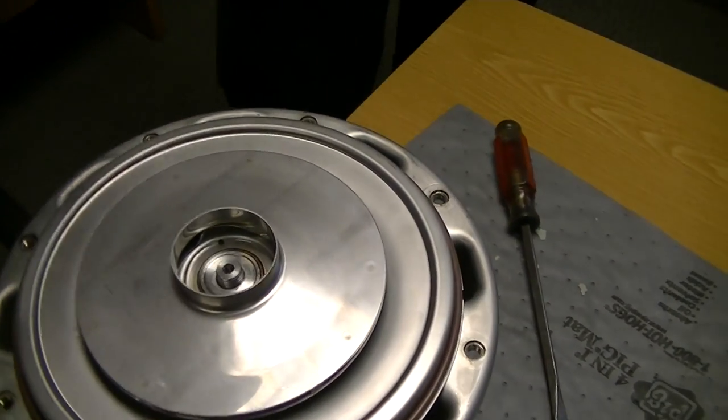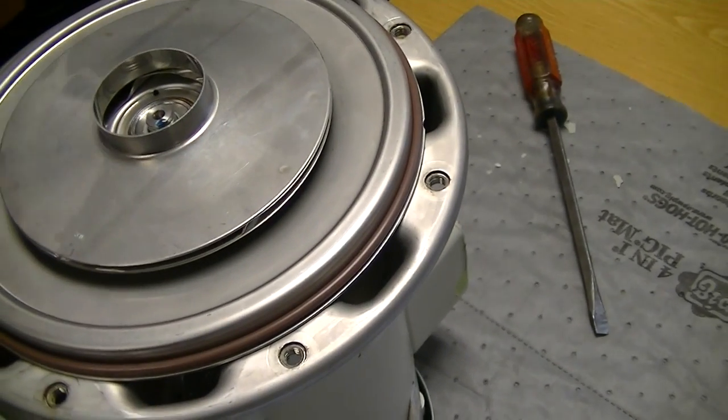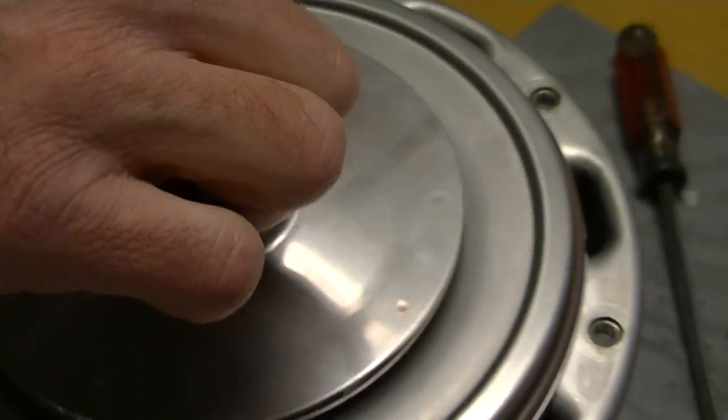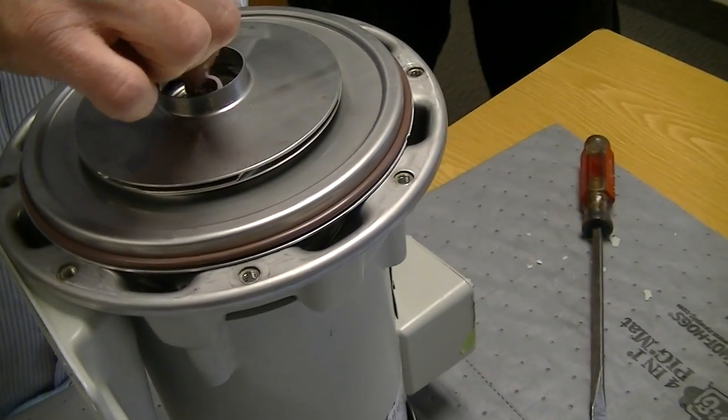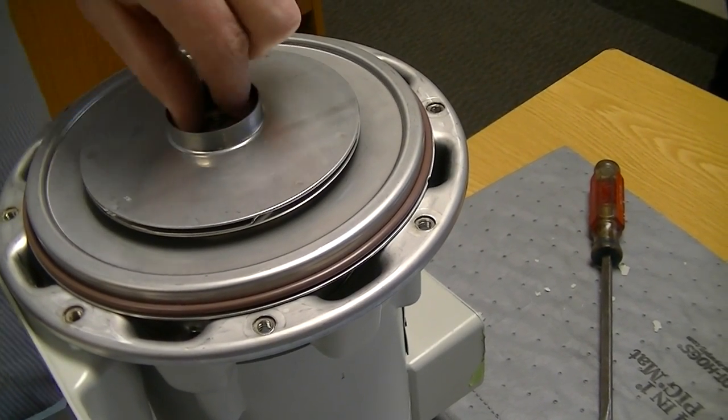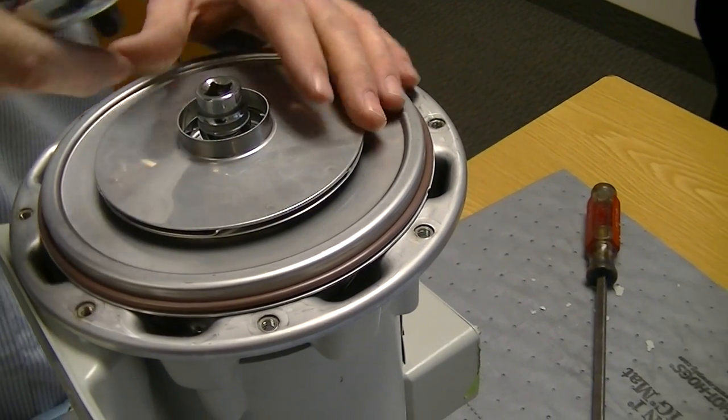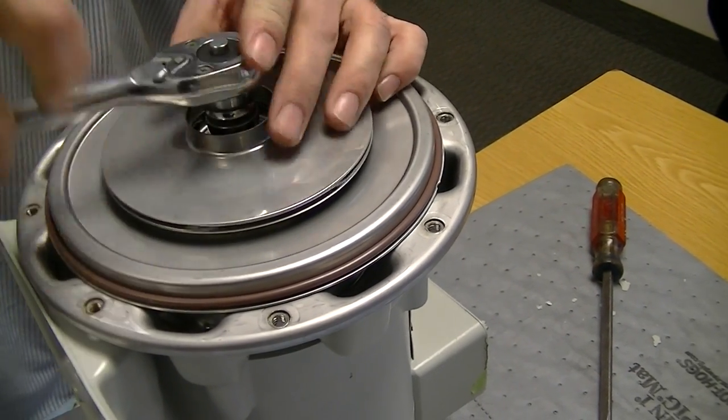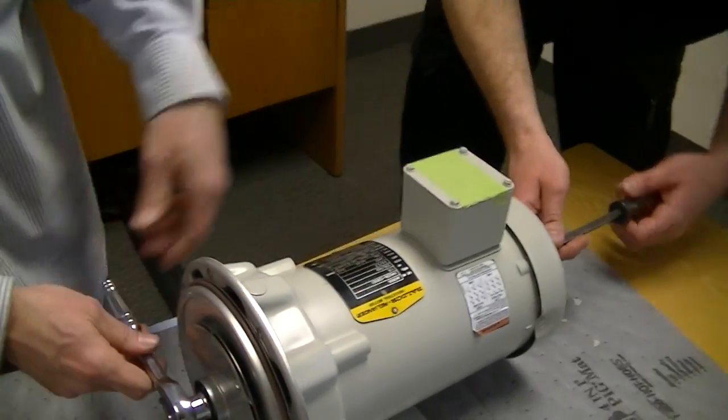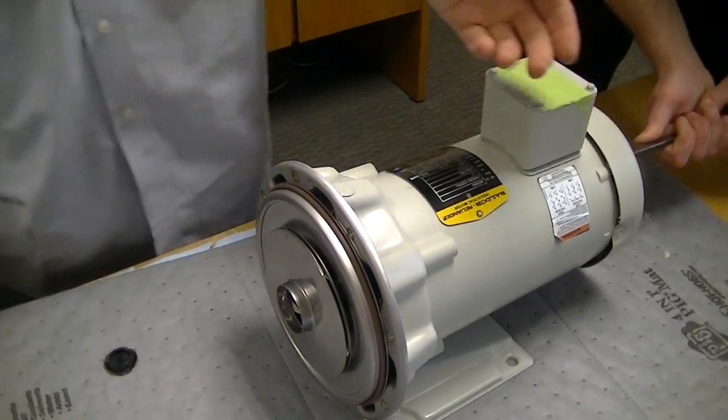Stand it back up. Put a little Loctite on there. Remember the blue one's what I always use, just a teeny little bit. You don't need a lot. It's not easy to get it apart if you put too much. And you just start your threads. This is where we're going to have to hold the back again to tighten this nut. Just hold this, a little crank, and that's that.